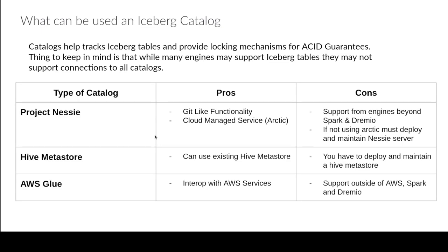Project Nessie is an open source project that was really created for the purpose of acting as a catalog - literally built to be a catalog for something like an Iceberg table. Because of that, it gives you extra features. It actually has git-like functionality, so you can branch at the catalog level. There are other things that try to do git-like semantics, whether at the file level or the table level, but the benefit of doing it at the catalog level relates to how git works - tracking changes between point A, point B, point C, and point D.